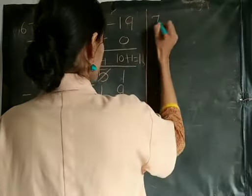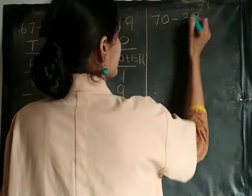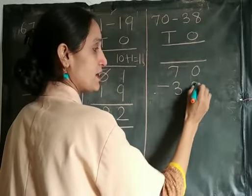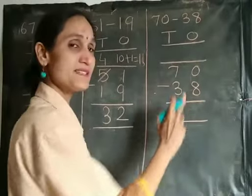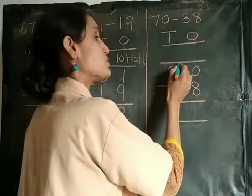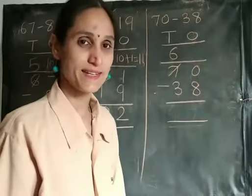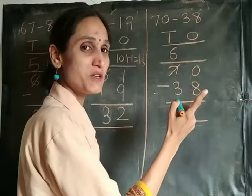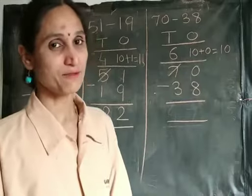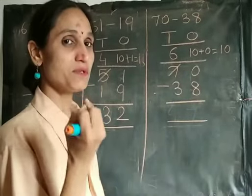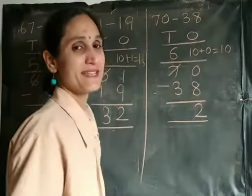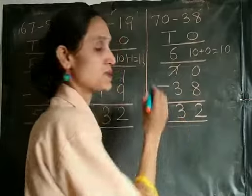One more example: 70 minus 38. Again we need to mark the columns as 10s and ones, and write down the numbers. 70 minus 38. We cannot subtract 8 from 0, so we need to borrow again from the 10s column. Cut this and write down 6 here — 7 minus 1 is 6. When we borrow 1 from the 10s column to the 1s column, it is 10 plus 0 is 10. We can subtract 8 from 10. Count 9 and 10 — that's 2. Write down 2 in the 1s column. Go to the 10s column. 6 minus 3 is 3. So the answer is 32.